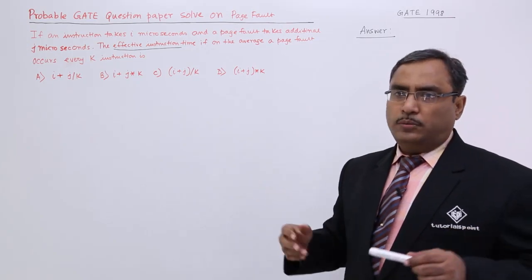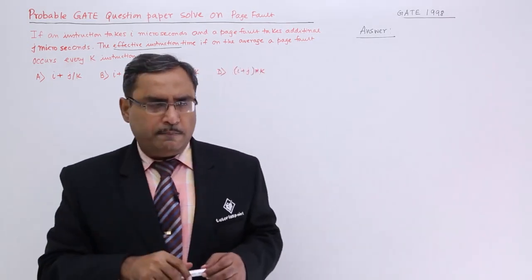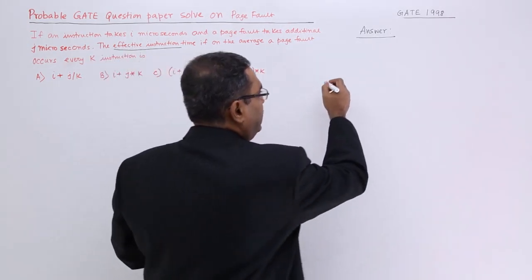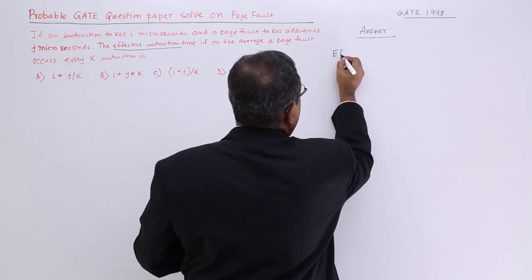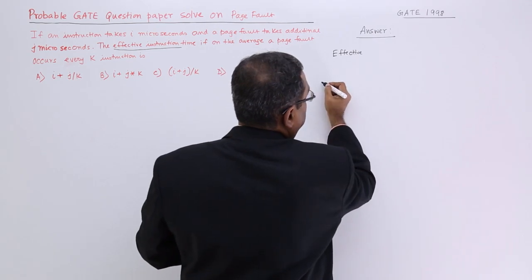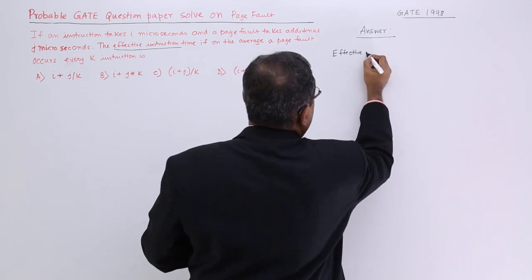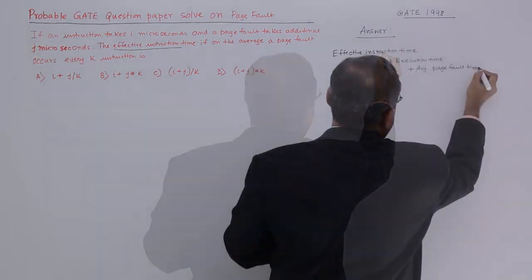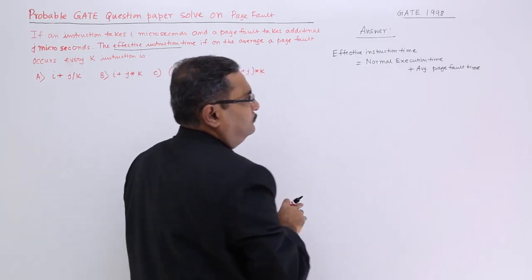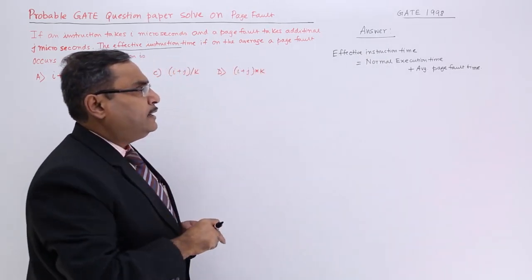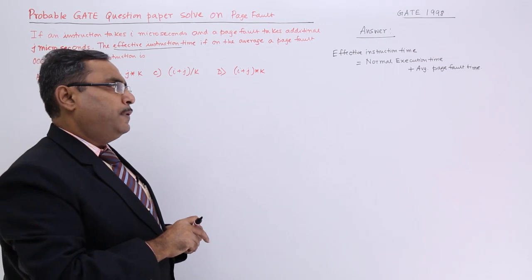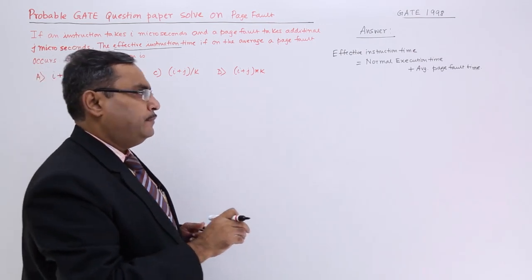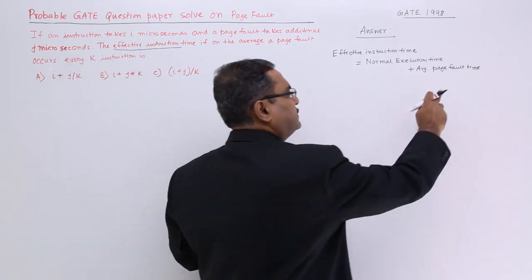How to solve this one? It is a very simple problem, not a big deal. Effective instruction time is equal to normal execution time plus average page fault time, or page fault service time.